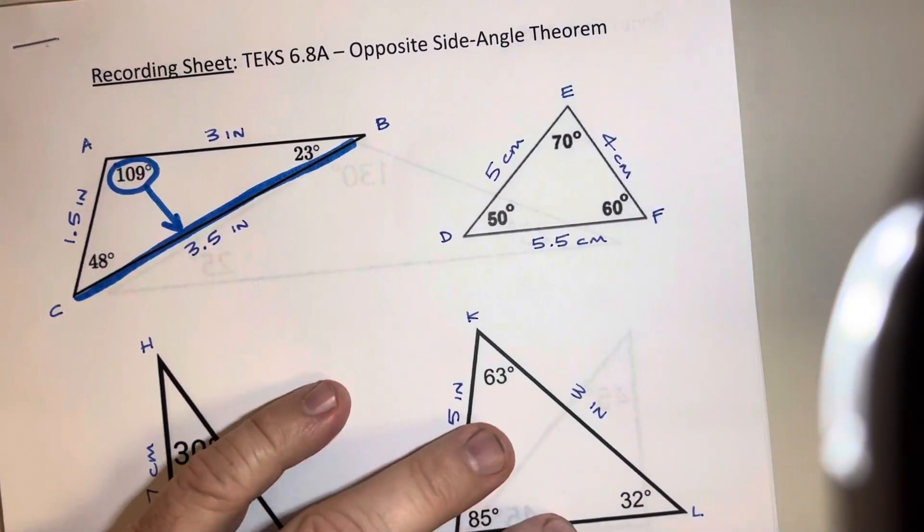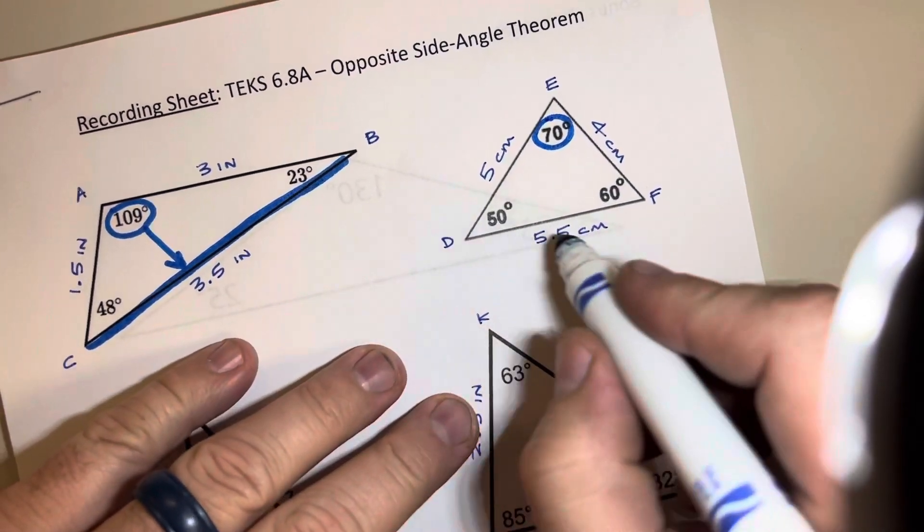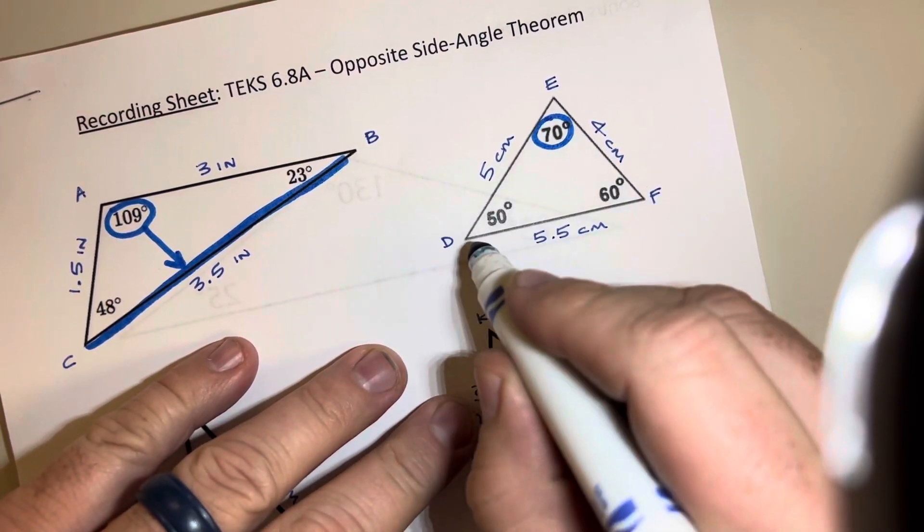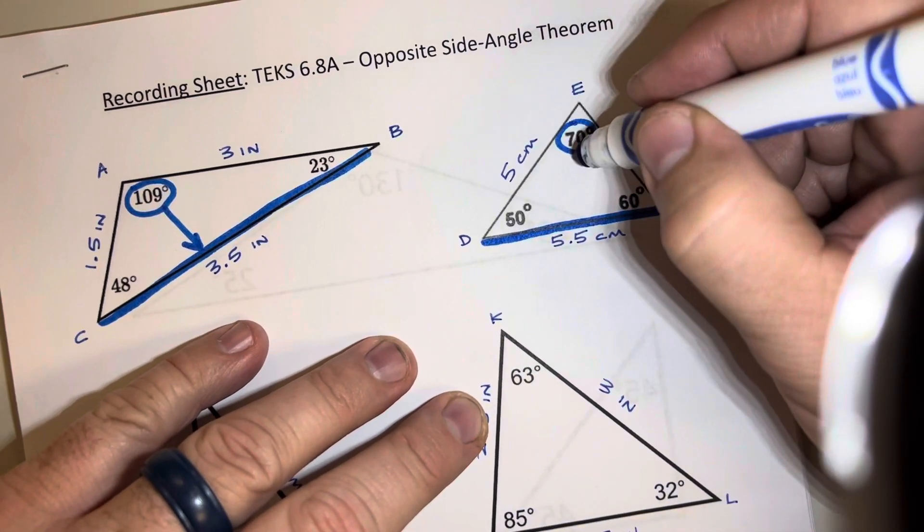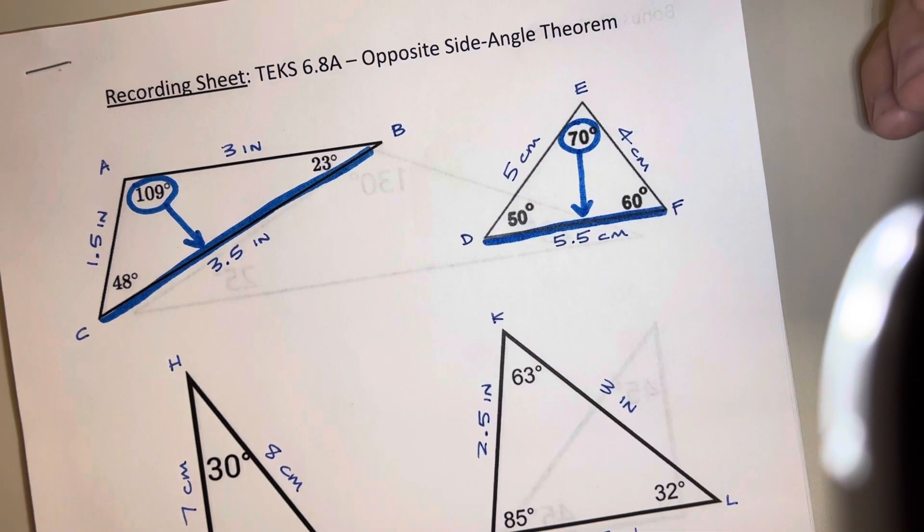So there's one of our rules is that the biggest angle is always opposite from the biggest side and that's true in all triangles. 70 is the biggest angle here and 5.5 is longer than the other two sides and so once again we see that the biggest angle is across from the biggest side.